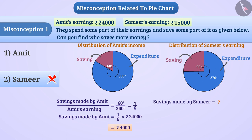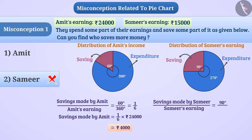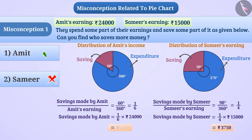Savings made by Samir divided by Samir's earning equals 90 degrees divided by 360 degrees, which equals 1/4. So savings made by Samir is 1/4 multiplied by rupees 15,000, which equals rupees 3,750. Therefore, Amit saves more money — option 1 is the correct answer.